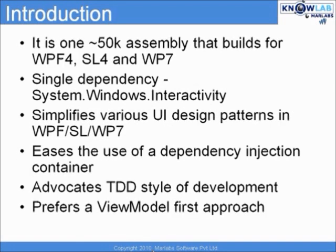Let us now take a look at what Caliburn Micro is. Caliburn Micro is a 150k assembly that builds for WPF 4, Silverlight 4 and Windows Phone 7. It has a single dependency on the System.Windows.Interactivity DLL, which is used to create behaviors within our application. If we are looking at building applications that target the 3.5 framework, then Caliburn Micro would not fit in and we would have to go to its predecessor, the Caliburn framework.